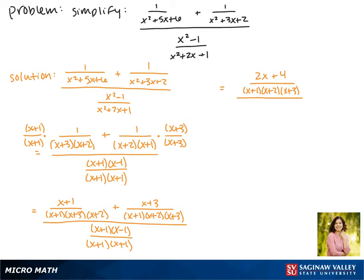That's divided by x plus 1 times x minus 1 over x plus 1 times x plus 1. Now we have a fraction divided by a fraction so we have to multiply by the reciprocal.